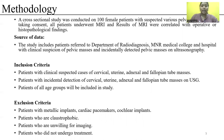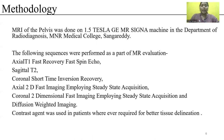Exclusion criteria: Patients with metallic implants, cardiac pacemakers, or cochlear implants. Patients who are claustrophobic. Patients who are unwilling for imaging. Patients who do not undergo treatment. MRI of the pelvis was done on a 1.5 Tesla MR machine. The following sequences were performed as part of MRI evaluation.